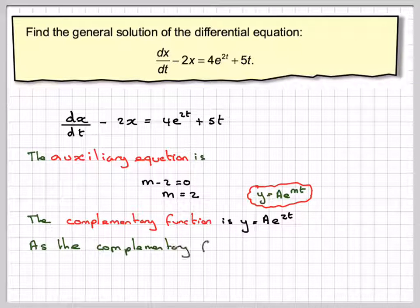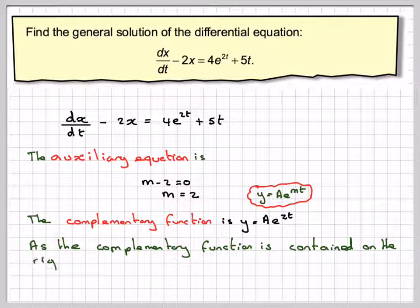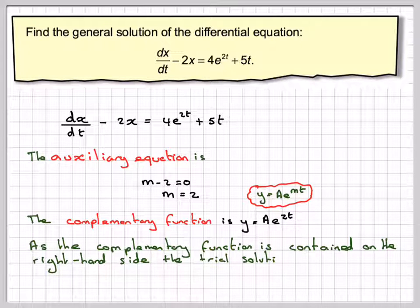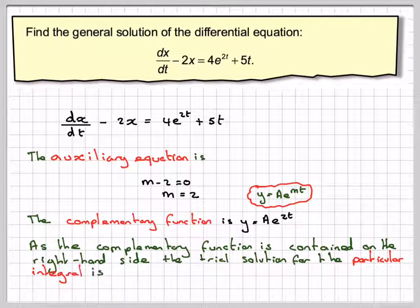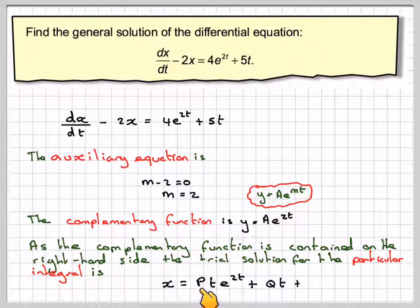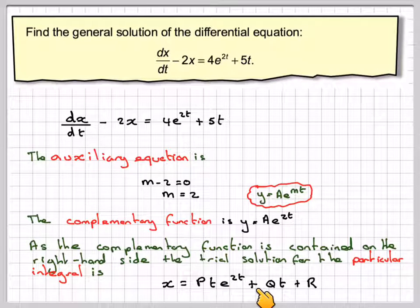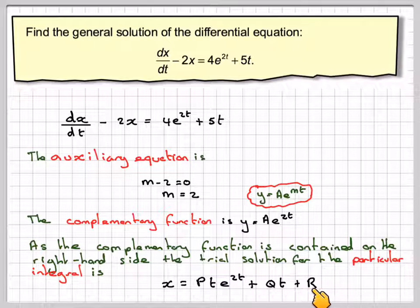Now, as this complementary function is contained in the right-hand side of the equation — i.e. here — then the trial solution for the particular integral is going to be x is equal to pte to the 2t plus qt plus r.